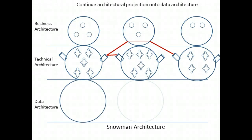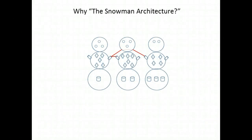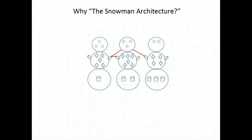Finally, we identify the data architecture that will support the technical services. The important point is that our data is partitioned such that any given data element is owned by one and only one of the technical services. We now have a complete snowman architecture. The business functions partitioned by synergy make up the head of the snowman. The services, which correspond one-to-one with synergy groups, form the torso. And the data partitioning, reflective of the service partitioning above it, is the bottom of the snowman. It doesn't take long staring at one of these architectural diagrams before you start seeing the whole thing as groups of snowmen.